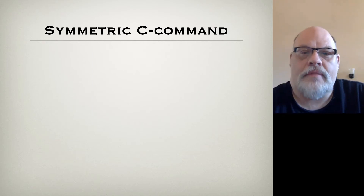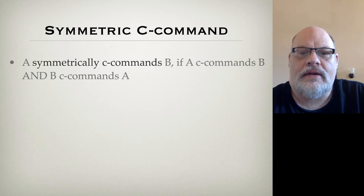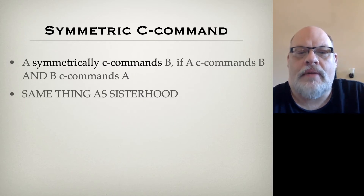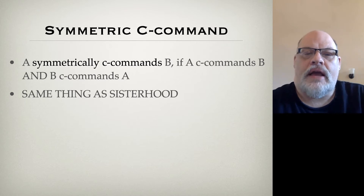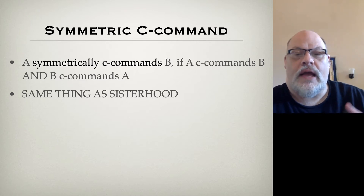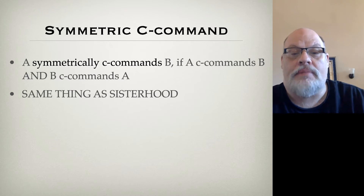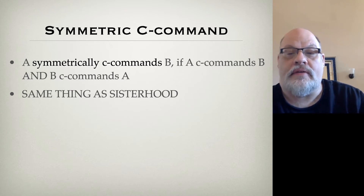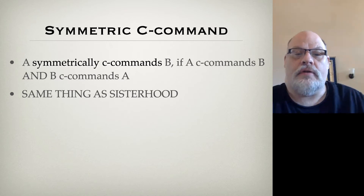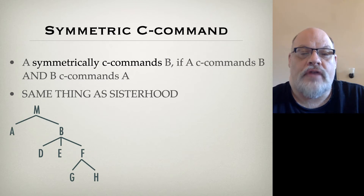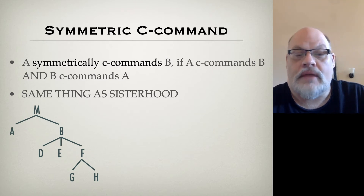One kind is called symmetric C-command, and symmetric C-command amounts to sisterhood. Symmetric C-command is when A commands B and B commands A — so they C-command each other. In our tree, A and B symmetrically C-command each other: A C-commands B and B C-commands A.